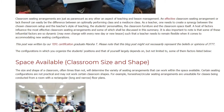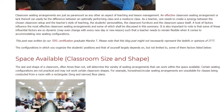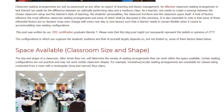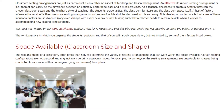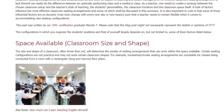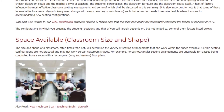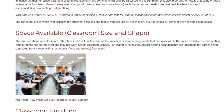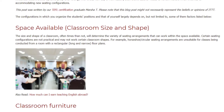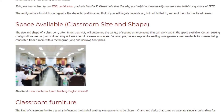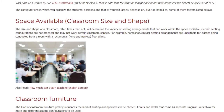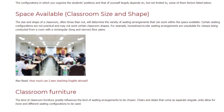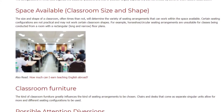The configurations in which you organize the students' positions depend largely on, but are not limited to, the following factors. Classroom size and shape: the size and shape of a classroom will often determine the variety of seating arrangements that can work within the available space. Certain seating configurations are not practical for certain classroom shapes — for example, horseshoe or circular seating arrangements are unsuitable for rooms with a rectangular, long and narrow floor plan.